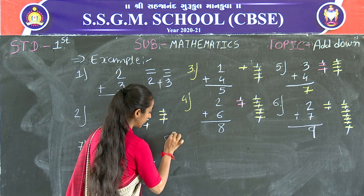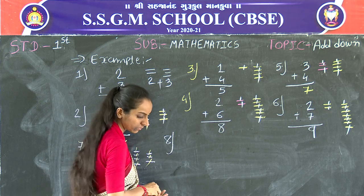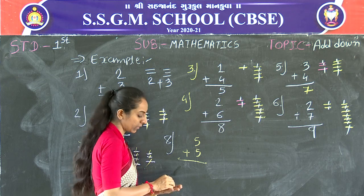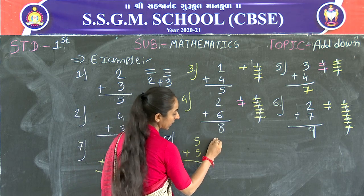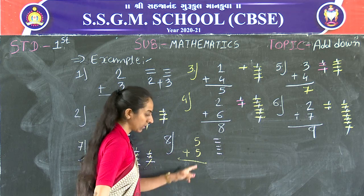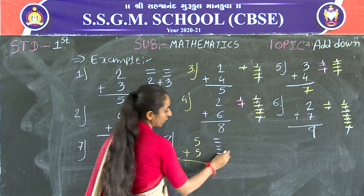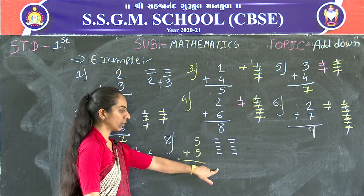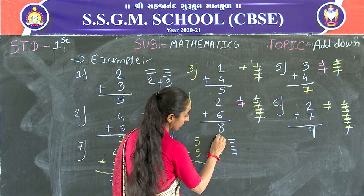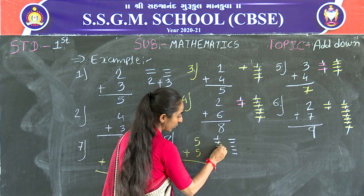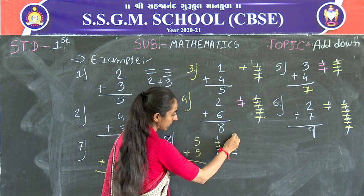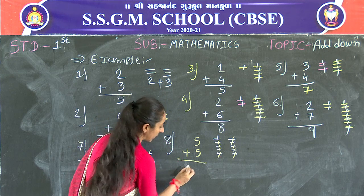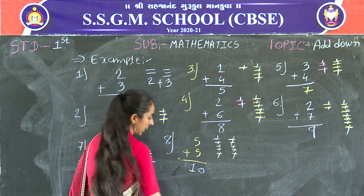Next one: 5 plus 5. First draw 5 lines: 1, 2, 3, 4, 5. Then draw 5 more lines: 1, 2, 3, 4, 5. Count all the lines: 1, 2, 3, 4, 5, 6, 7, 8, 9, 10. Write down 10. 5 plus 5 equals 10.